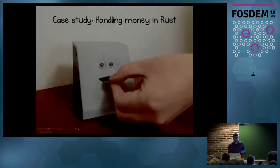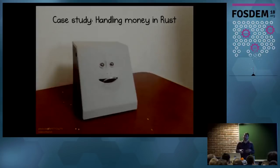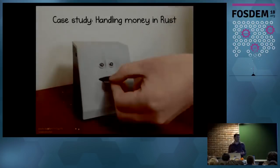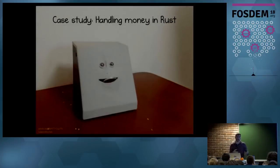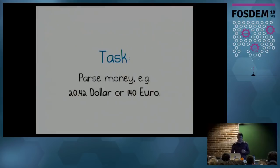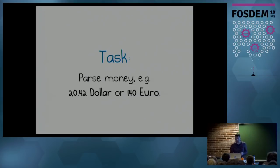For that, we'll build a little tool, a little library. The case study is going to be handling money in Rust. We'll think about the data object — how does it look, and how does the compiler help guide us towards something more convenient and natural? The task is: parse money. What can go wrong? Let's parse some money — twenty dollars forty-two cents, or one hundred forty euros. That's our task for the next few minutes.